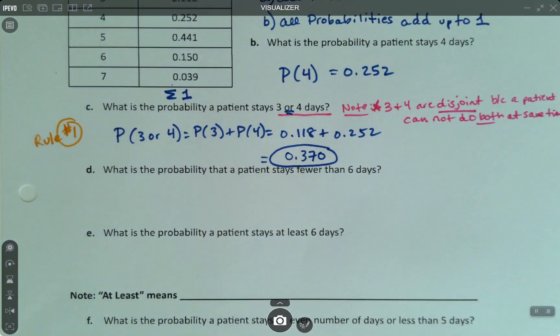So the probability of three or four is the probability of three plus the probability of four, which is 0.118 plus 0.252. And there we have it. So that would be 0.37.